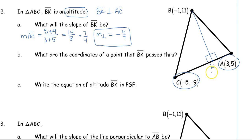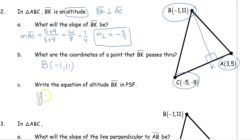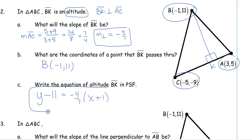We can't find the coordinates of K, but we do have point B, which was given from the beginning, so we don't need to do any extra work to find a point. Now we have our point and our slope. In point-slope form: Y minus the Y-coordinate equals negative 4 over 7 times (X minus negative 1), which means adding 1. That's our equation of the altitude.